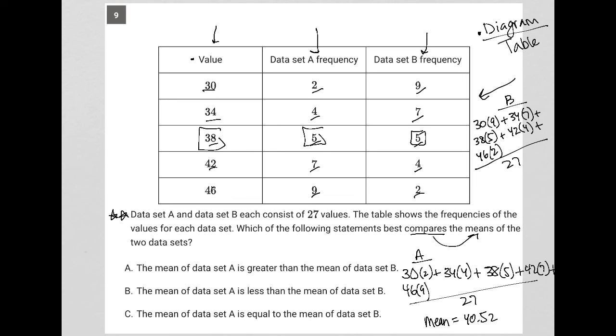Go back to my calculator, and what I get there is that the mean is equal to 35.48. So obviously the mean of data set A is larger than the mean of data set B.